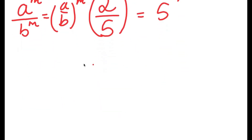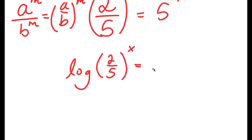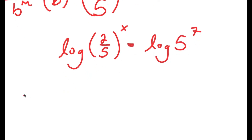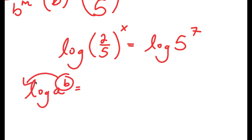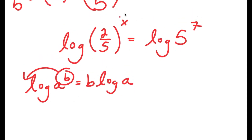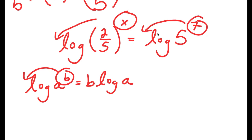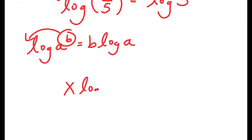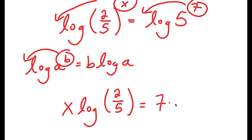Now from here I'm going to take the log on both sides. So I get log of (2 over 5) to the power of x is equal to log of 5 to the power of 7. Using the property that log of a to the power of b equals b times log a, I can move x to the front and 7 to the front. So I get x times log(2 over 5) is equal to 7 times log 5.